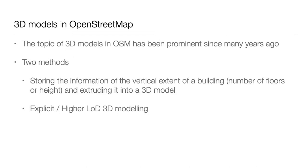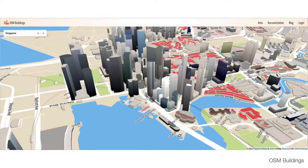The topic of 3D city models is not new to the OpenStreetMap community — it has been around for more than a decade. There are different ways to obtain 3D city models from OSM: from the stored height of the building or its number of floors and then extruding the footprint, or by providing more detailed representations using certain tags, such as the type of roof, resulting in models with a higher level of detail. This is an example of OSM data in 3D thanks to the project OSM Buildings, showing the central business district in Singapore, where you can see skyscrapers extruded by floor count alongside nicely modeled landmark buildings.